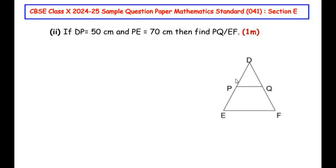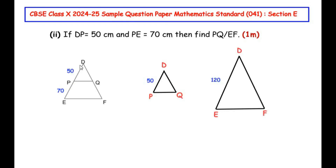If DP equals 50 cm and PE equals 70 cm, find PQ divided by EF. We mark DP as 50 cm and PE as 70 cm, referring back to the two triangles obtained by splitting the big triangle. In triangle DPQ, DP is 50 cm, and in triangle DEF, DE is 120 cm — the total length of DE, that is 50 plus 70. Since triangle DPQ was proved similar to triangle DEF, the corresponding sides will be in the same proportion.